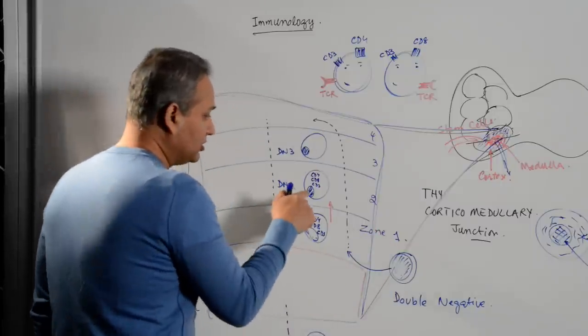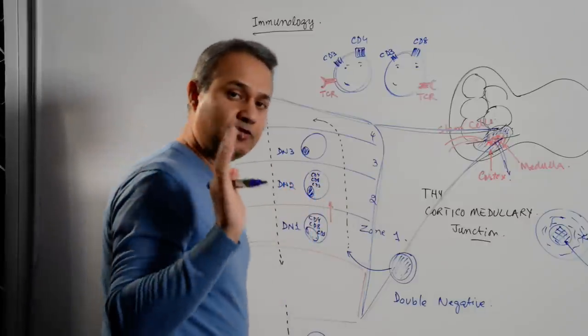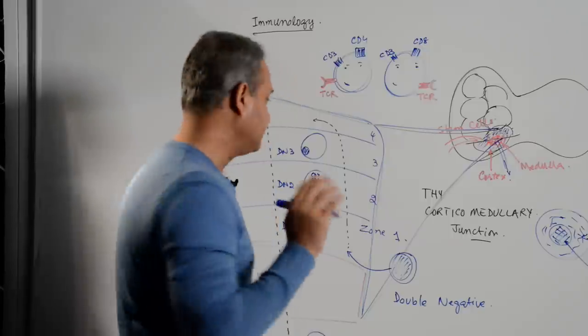So double negative two, nothing on the surface yet. CD4, CD8, CD3, preparing to start making the T cell receptors.